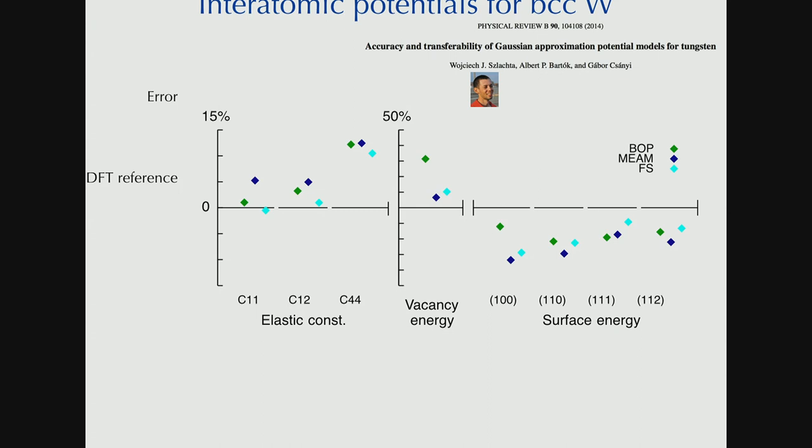It's a BCC metal. And these are three different interatomic potentials across the decades. So a Finnis-Sinclair potential, an MEAM, and the Bonny potential. And this is the DFT reference, error with respect to DFT reference for a bunch of properties. And you can see that not a lot of accuracy progress has been made. Understanding progress, yes, but not accuracy.